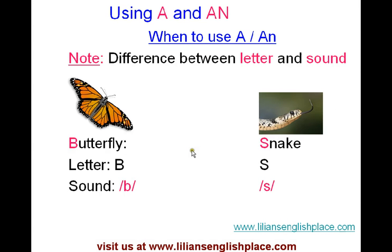Now what is important to note is the difference between a letter and a sound. Let's look at these two words: butterfly, snake. The B here for butterfly is the letter — this is what you see when you have the word butterfly. The sound that you make when you say B is 'b.' For snake, the letter is S and the sound is 's.'